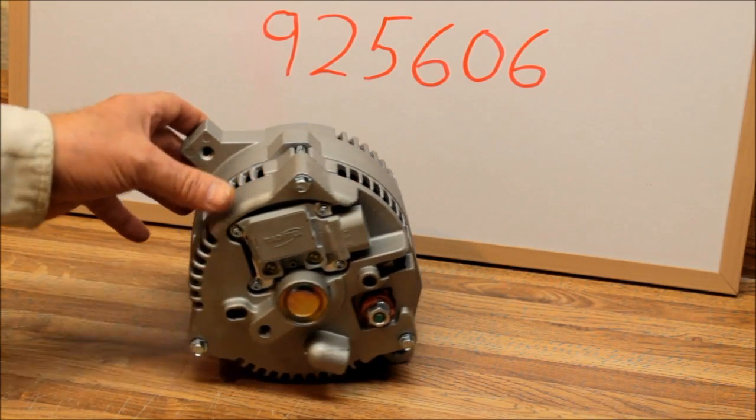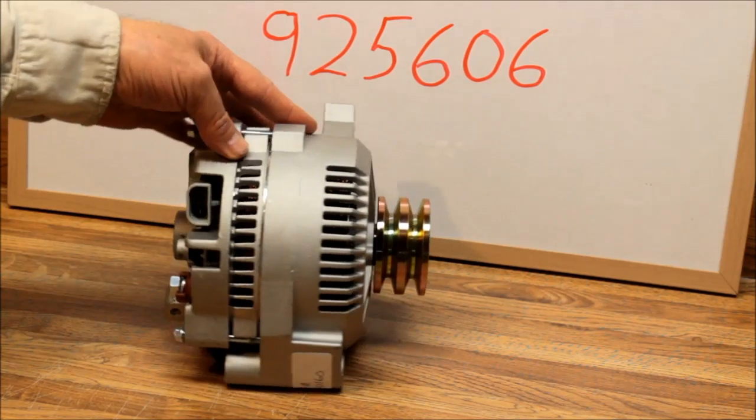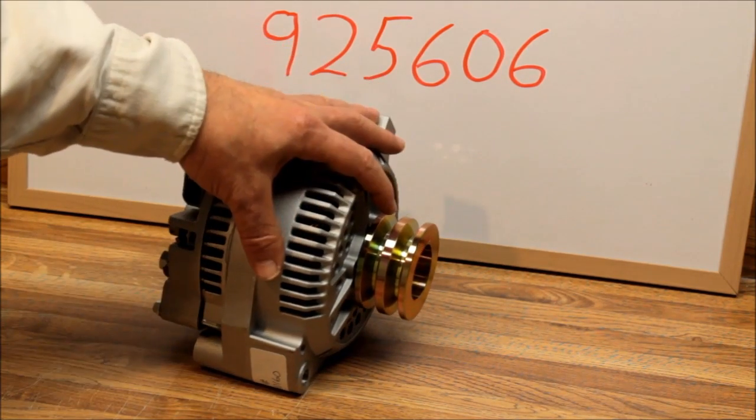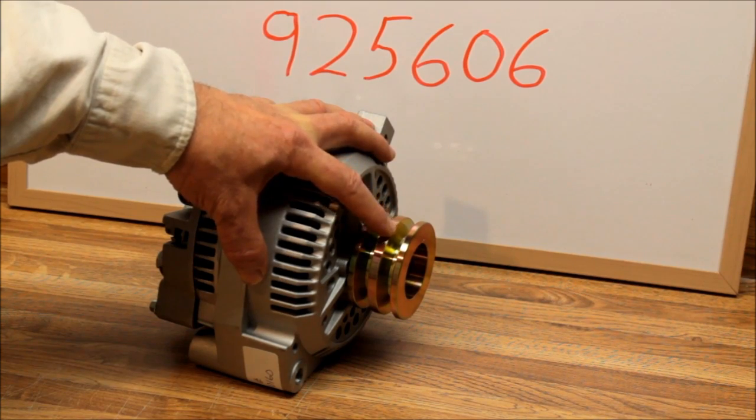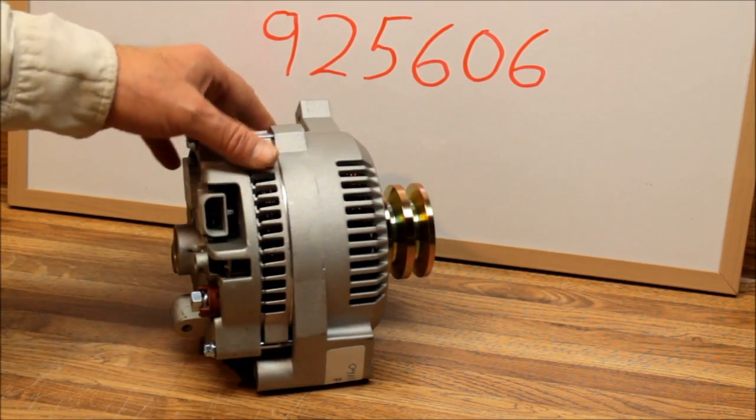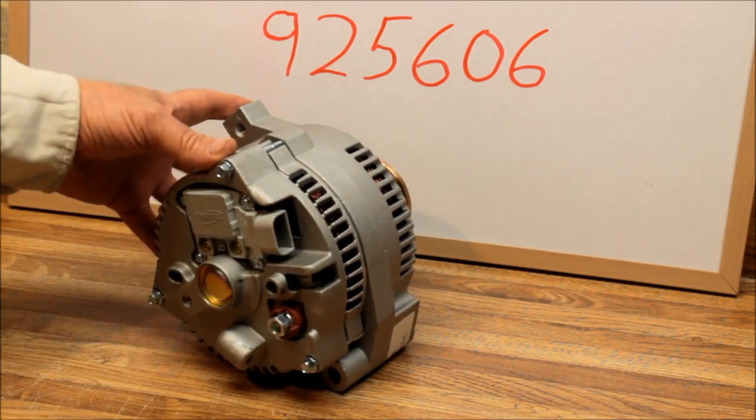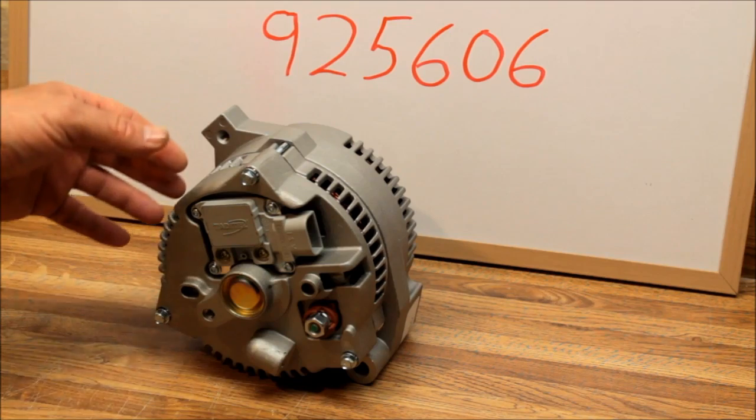So the 3G alternator is an excellent replacement for both the 1G series and the 2G series. Like I said, this is going on an '89 Ford truck. It ran dual v-belt. We can offer all kinds of different pulley selections with these alternators.